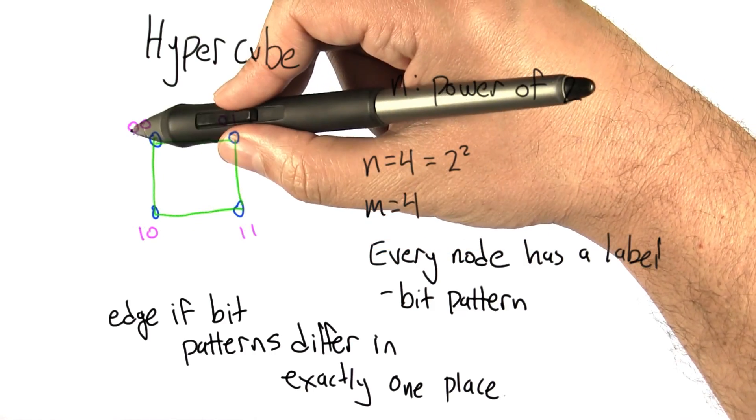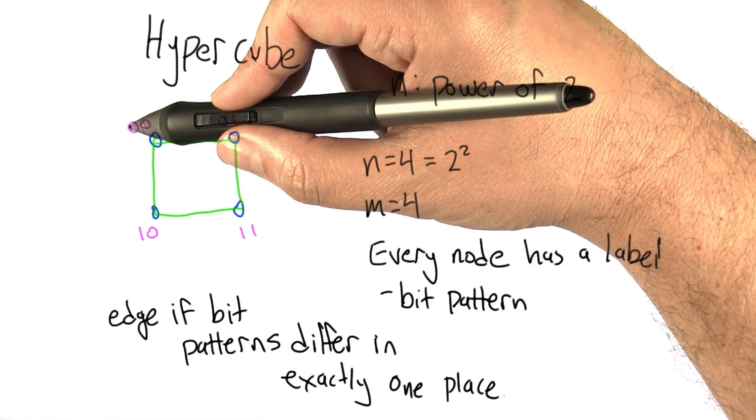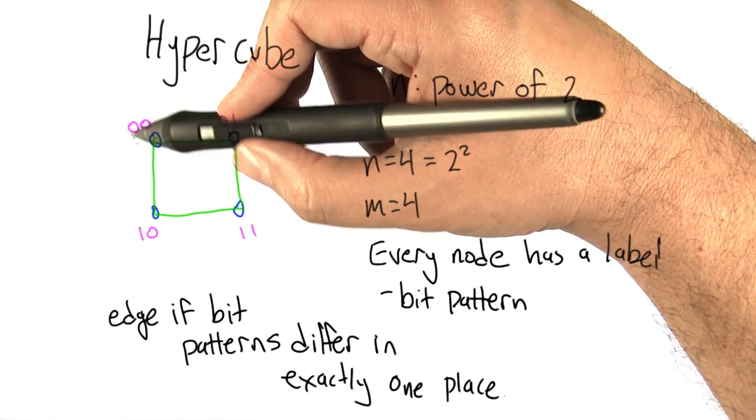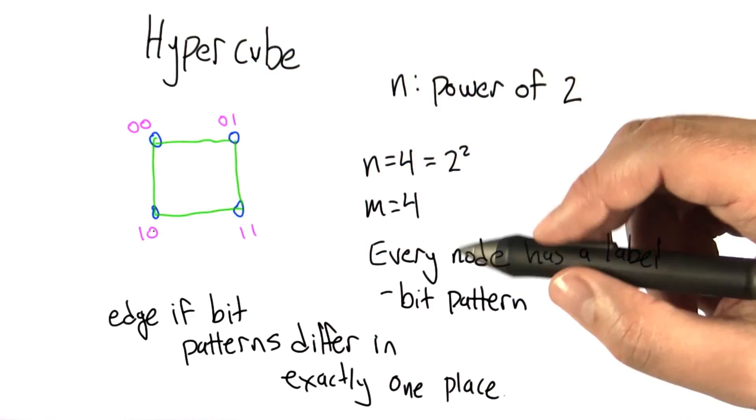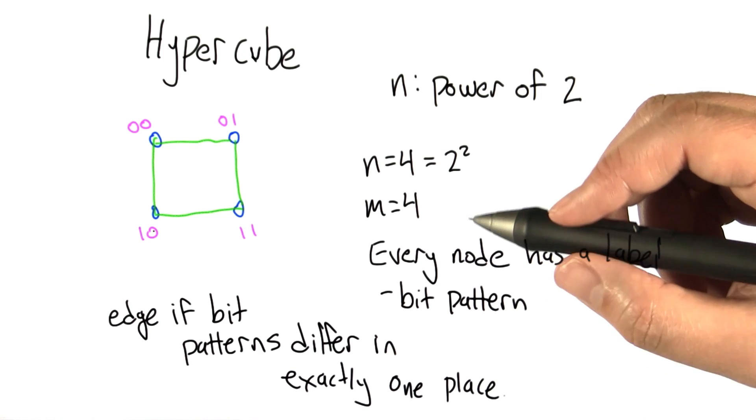We connect these two because they differ in the second place: 0, 0, 0, 1. And we connect these two because they differ in the first place: 0, 0, 1, 0. We can generalize this to larger graphs.